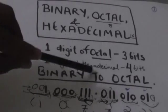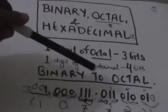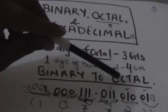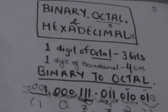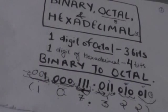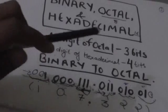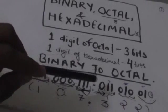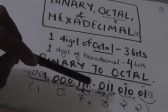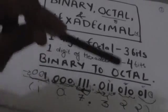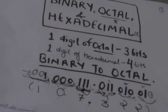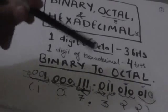First we will learn how we can convert a binary number into an octal number. To convert binary into octal, we will partition the binary number into groups of 3 bits. We will start from the radix point or binary point and proceed to the right and left.